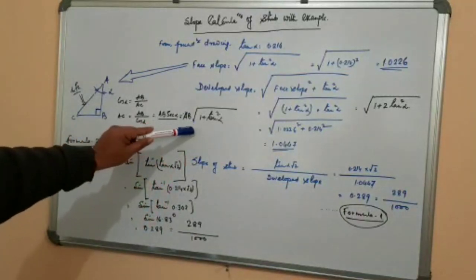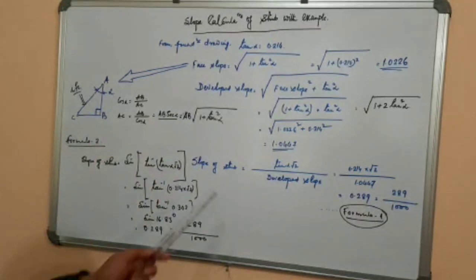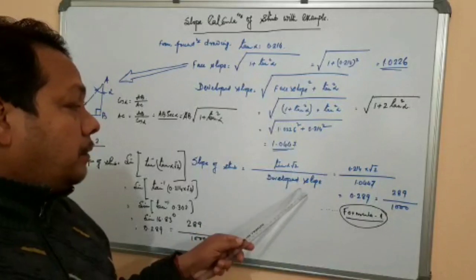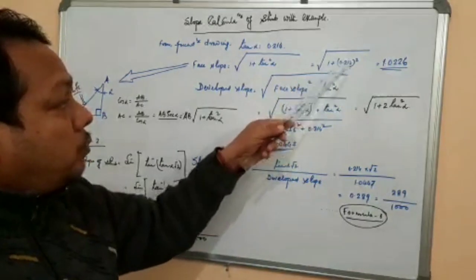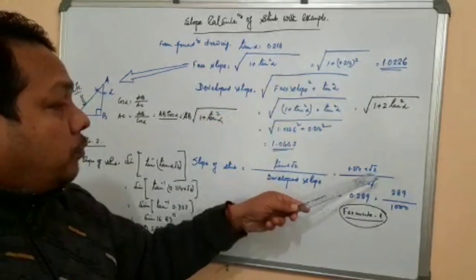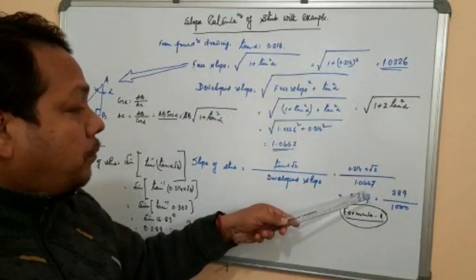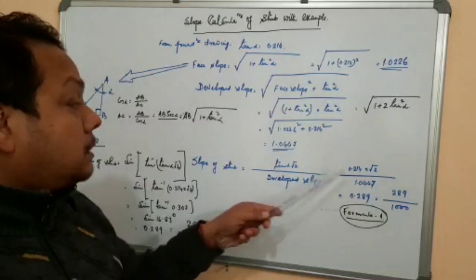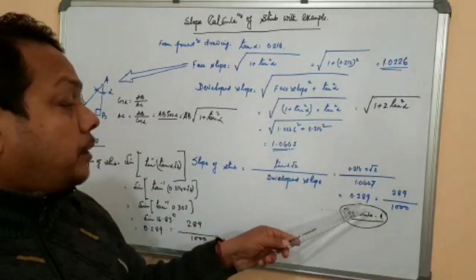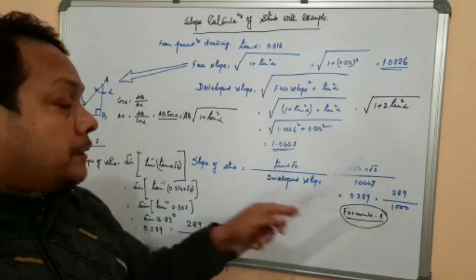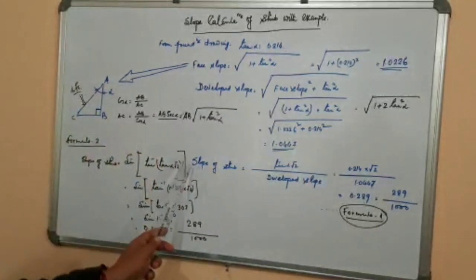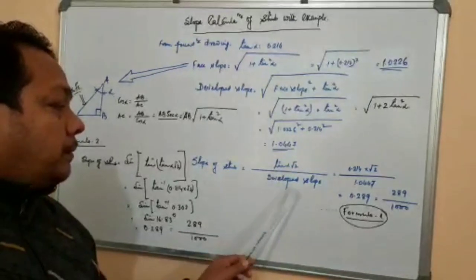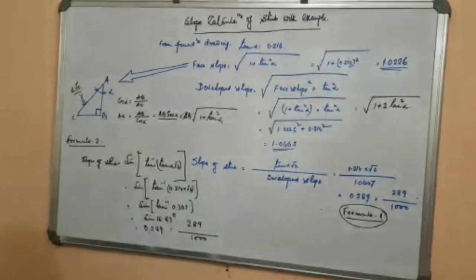Now the slope of staff. Formula one: tan alpha × root 2, divided by developed slope. So: 0.214 × root 2, divided by 1.0447. This gives 0.289, meaning 289 divided by 1000. That is the first formula for slope of staff.